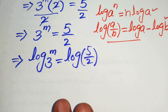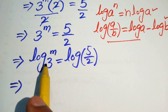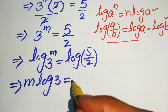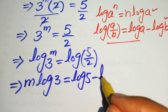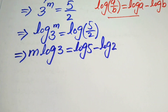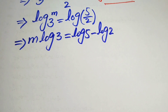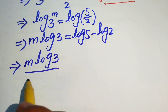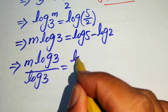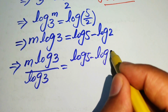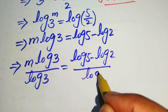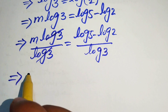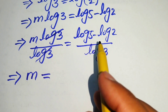Applying the first property to the left hand side, we move the exponent to the front and write m times log 3. On the right hand side, applying the quotient rule gives log 5 minus log 2. To isolate m, we divide both sides by log 3, giving m equals (log 5 minus log 2) divided by log 3.